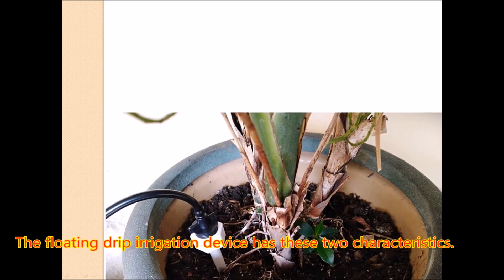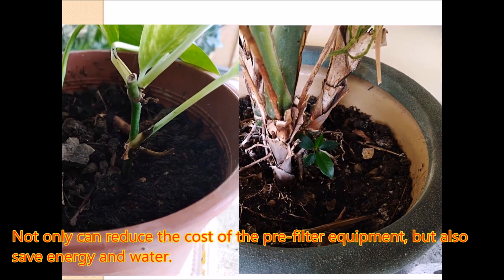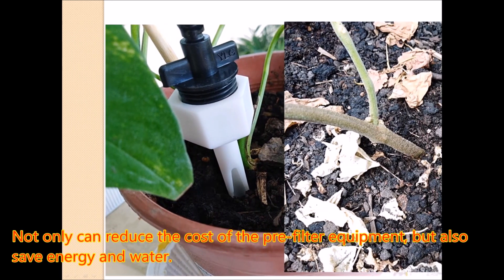The floating drip irrigation device has these two characteristics: not only can it reduce the cost of the pre-filter equipment, but also save energy and water.